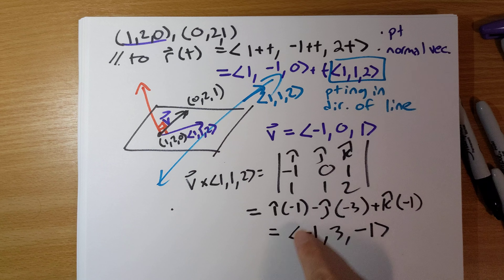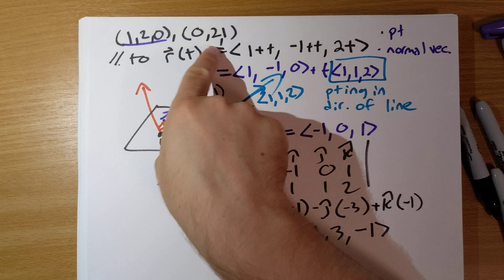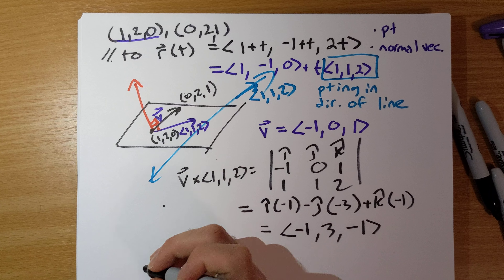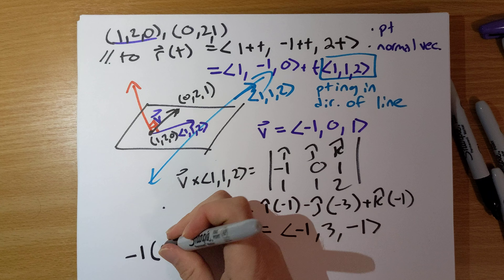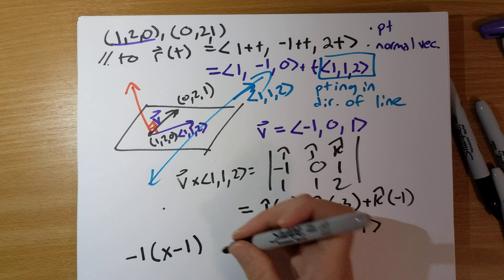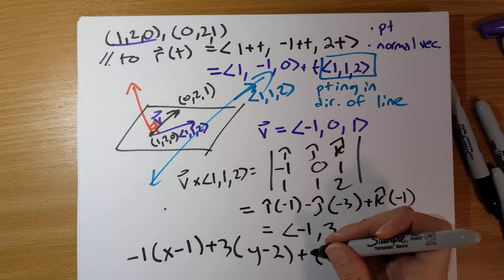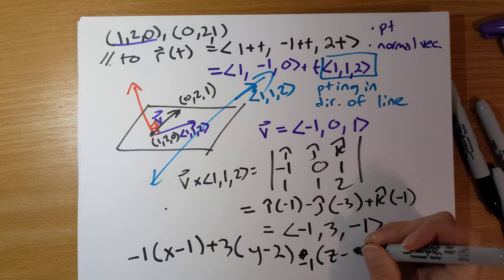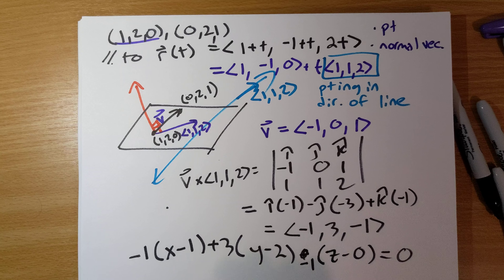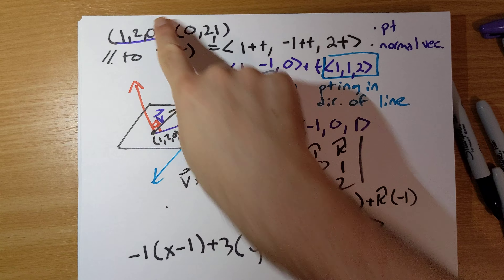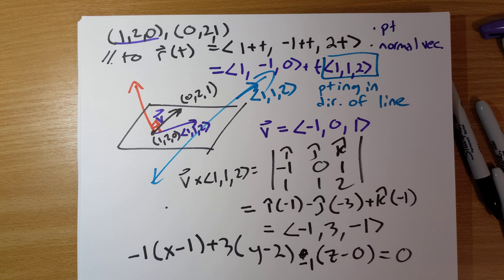So we have normal vector (-1, 3, -1) and we can use either given point. Using point (1, 2, 0), the equation of the plane is: negative 1 times (x minus 1) plus 3 times (y minus 2) plus negative 1 times (z minus 0) equals 0.